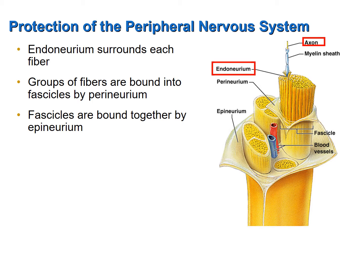Several axons with their endoneurium are then surrounded by a second connective tissue layer called a perineurium. That perineurium bundles those axons together into what is called a fascicle. And several fascicles are bundled together and surrounded by a connective tissue overcoat called an epineurium. So here we have axons bundled together by several layers of flexible cushioning connective tissue layers to help protect nerves from trauma. This is critically important in the peripheral nervous system since we don't have the protection of bone.